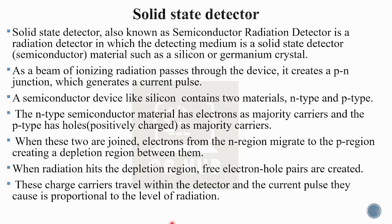The free electron-hole pairs are created and these charge carriers travel within the detector. A current pulse is generated and measured, and the level of radiation is determined from the current pulse.